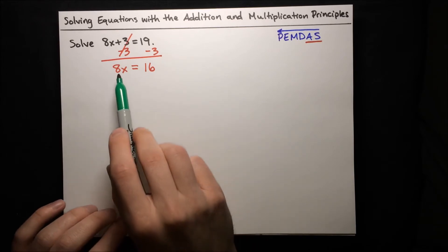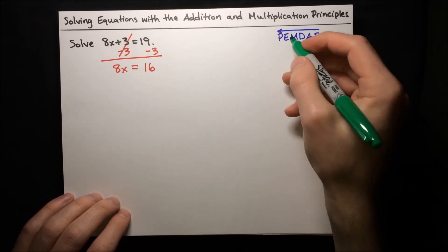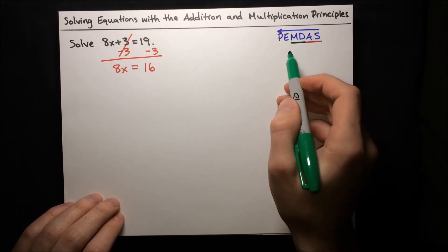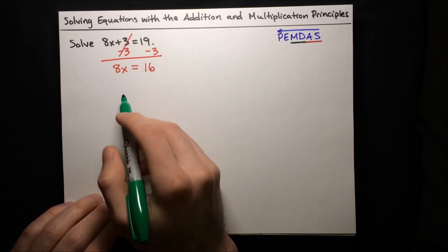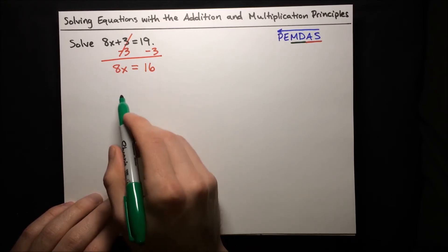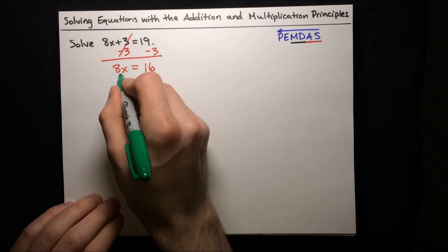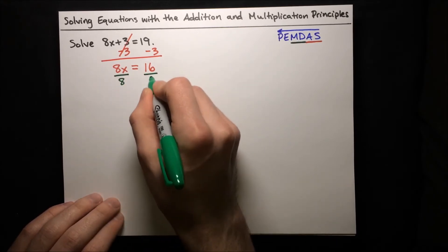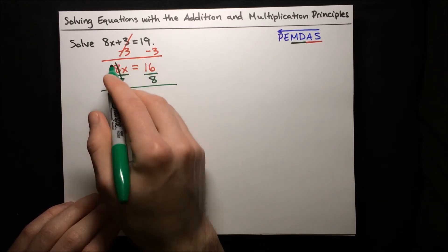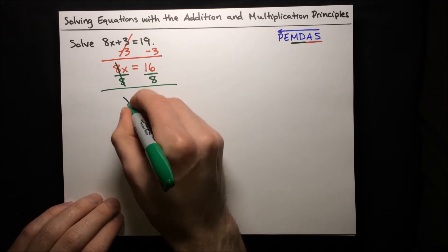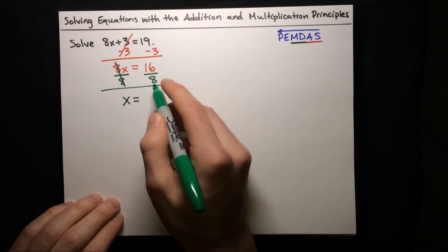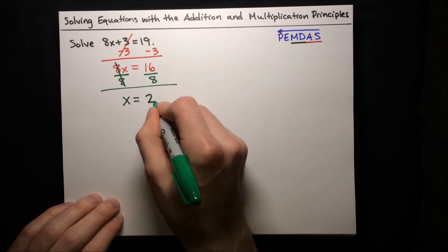Now that we've separated our variable and our constant, we're ready for the next step: the multiplication and division principles. We want to get x alone, so let's divide both sides by 8 to get that 8 off the x. Dividing by 8 on both sides will cancel out the 8, and we'll just have x on one side. x is equal to 16 over 8, and 16 divided by 8 is just 2. So x equals 2.